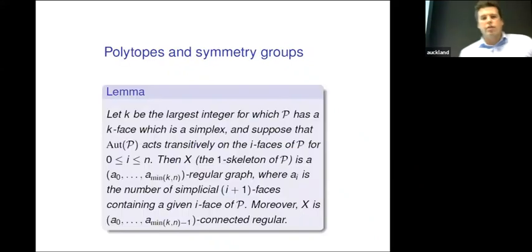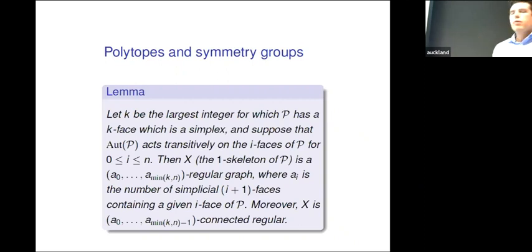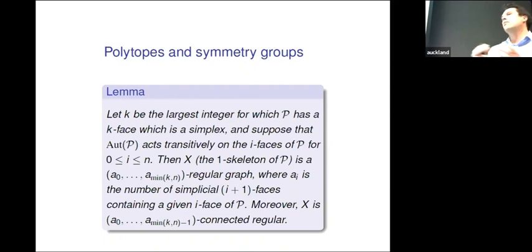Some of my slides will be a little bit technical and overloaded because I want to write down precise statements. But what I say will often not be so complicated. The first thing we can look at is a polytope such that K-faces are simplices. Simplices are the higher-dimensional analog of triangles or pyramids.